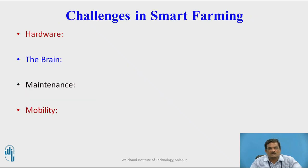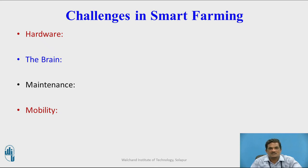Now with advantages, it is also facing some challenges. These are the challenges faced by farmers while setting up smart farming. Usually they are facing problems with hardware because the required hardware may not be available at the right time, and farmers are usually not qualified, so they may not know how to use these IoT components. It also incurs maintenance cost, which is a burden on farmers. As the IoT setup is usually large in size, movement of the IoT system from one location to another or from one field to another field incurs a transportation cost.